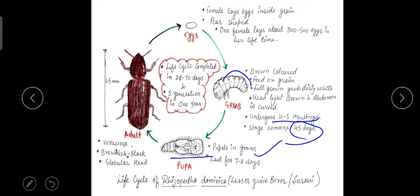After 45 days, the grub converts into pupa inside the grains, and this stage lasts for seven to eight days. After seven to eight days, the pupa breaks down and an adult emerges, which is a voracious feeder. Its color is brownish black, the head is globular, and its length is 1.5 mm. The complete life cycle takes 28 to 70 days, and five generations are seen in one year.